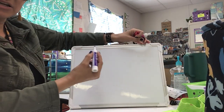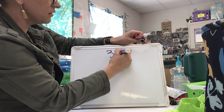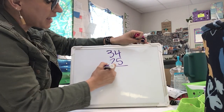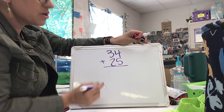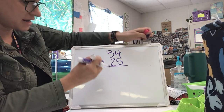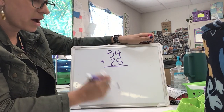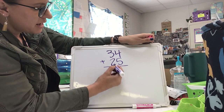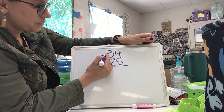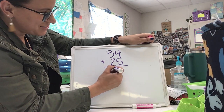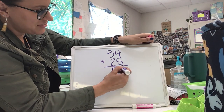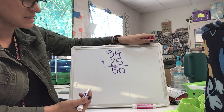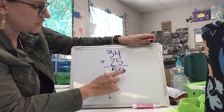My next equation: 34 plus 25. Again, I'm going to use partial sums. I'm going to add the tens and I'm going to add the ones. Three tens plus two tens is five tens, but remember it's five with a zero because it is in the tens place, so 50.